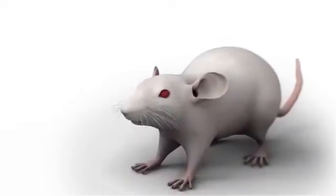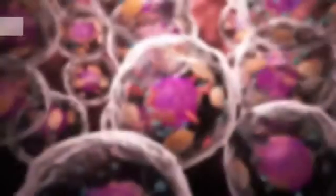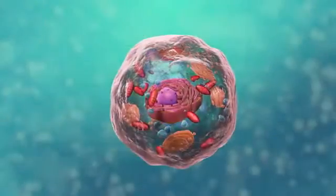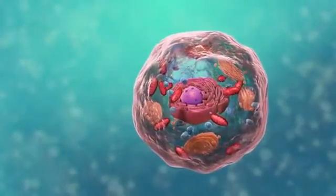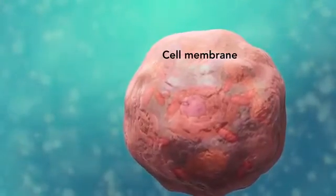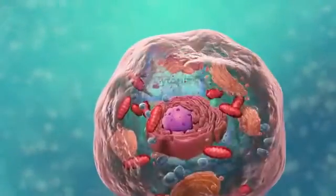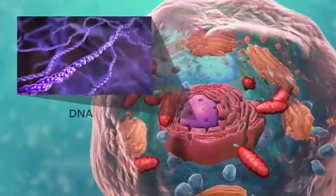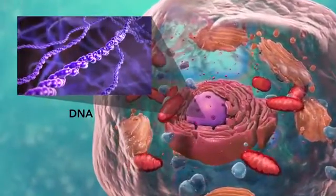Cells are the smallest living units of an organism. All cells have three things in common no matter what type of cell they are. All cells have a cell membrane which separates the inside of the cell from its environment, cytoplasm which is a jelly-like fluid, and DNA which is the cell's genetic material.